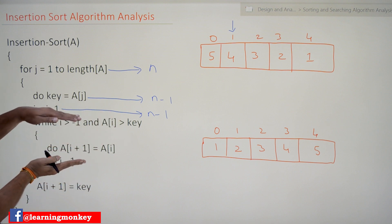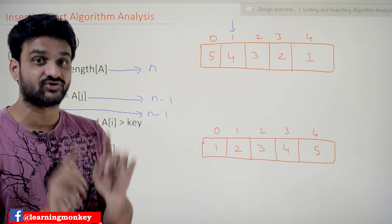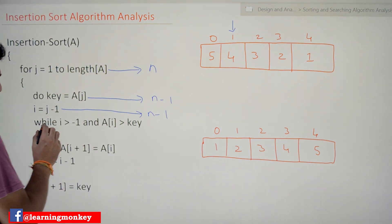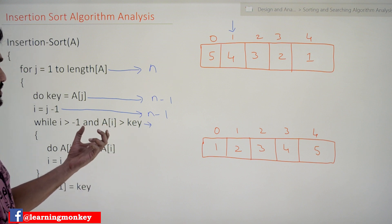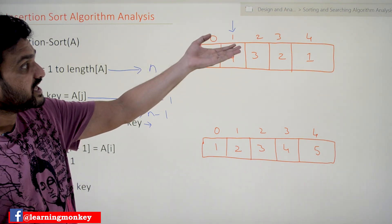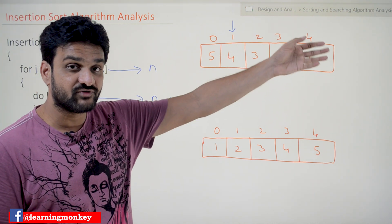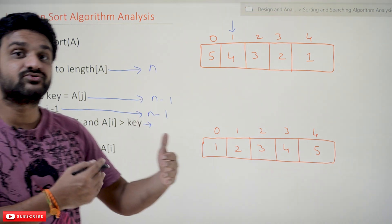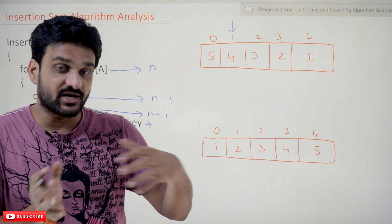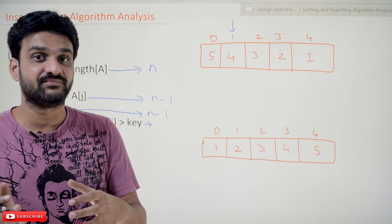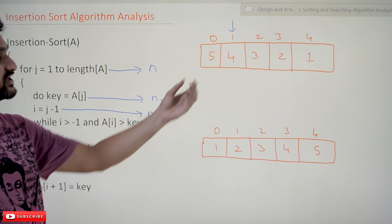Now this is a very important point — the while loop. Understanding this concept will make you understand the entire essence of this video. How many times will this while loop get executed? We are not sure about it. To analyze this, we take two cases: worst case and best case. Worst case means the elements are in reverse order and we are trying to sort them, so it takes the maximum amount of time because more comparisons are done.